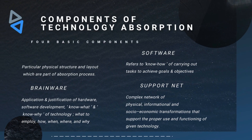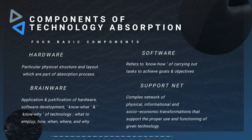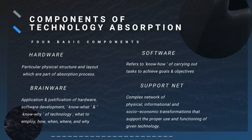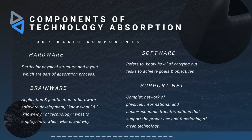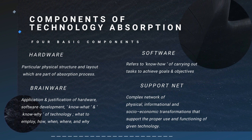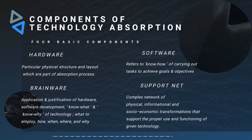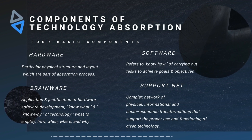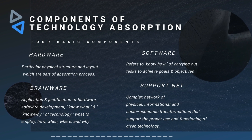The basic components of technology absorption are: Hardware, which is the particular physical structure and layout that forms the pipe of the absorption process. Software, which refers to the know-how of carrying out tasks to achieve goals and objectives. Brainware, which is the application and justification of hardware, software, development, know-what and know-why of technology. SoftwareNet, which is the complex level of physical, informational and socio-economic transformation.